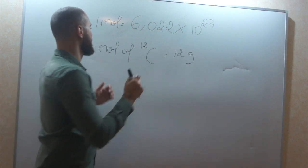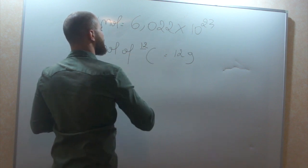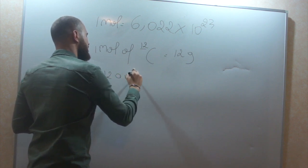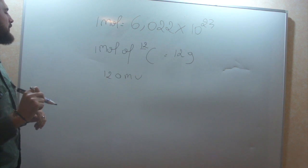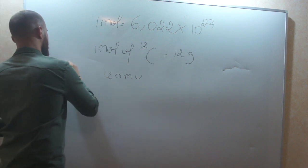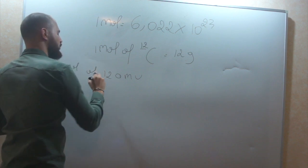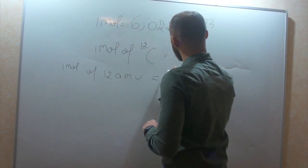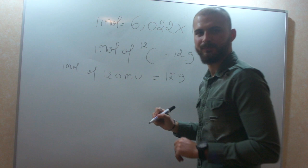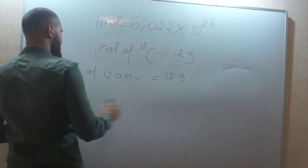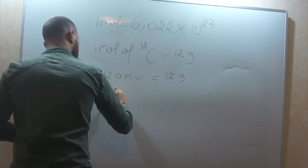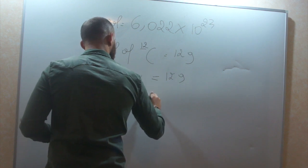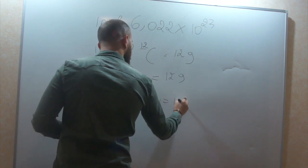That's very important. So, this 12 is 12 atomic mass units. So, one mole of 12 atomic mass units equal to 12 grams. So, simply, one mole of 1 atomic mass unit equal to 1 gram.